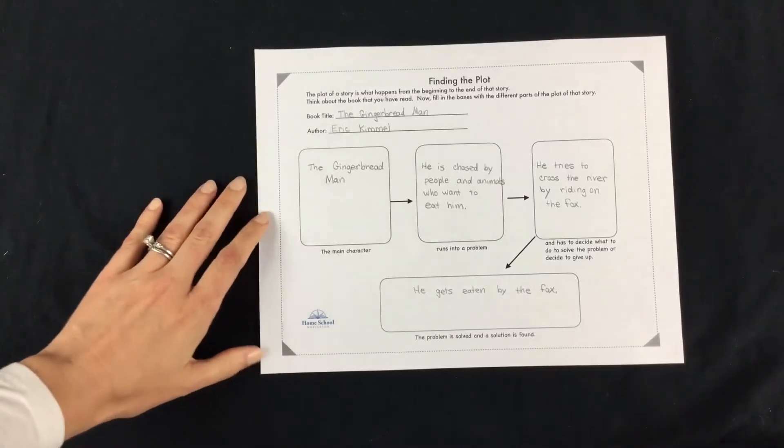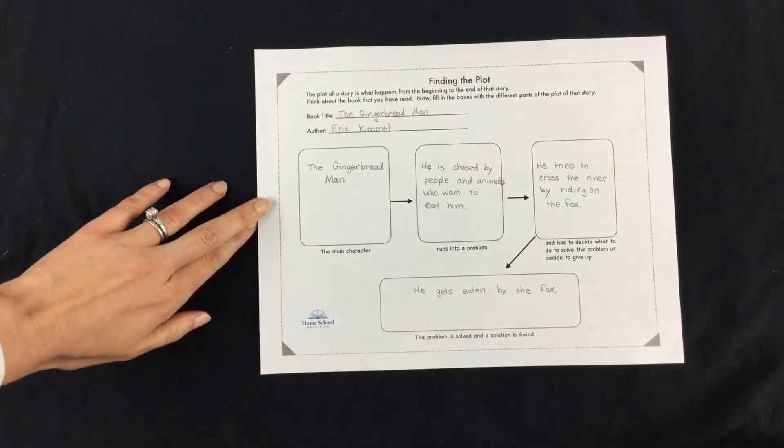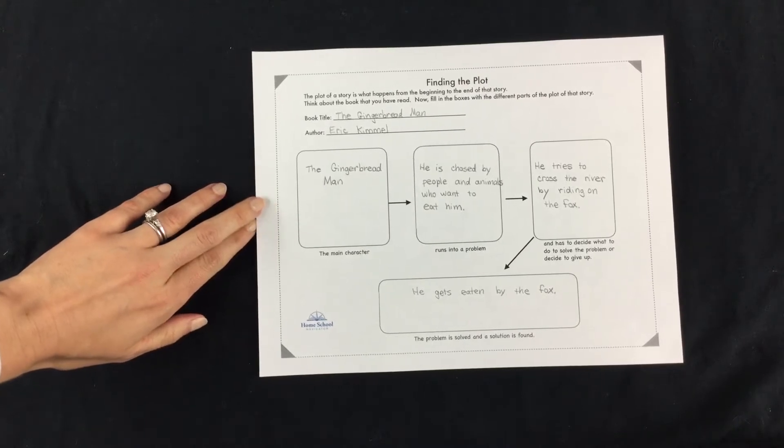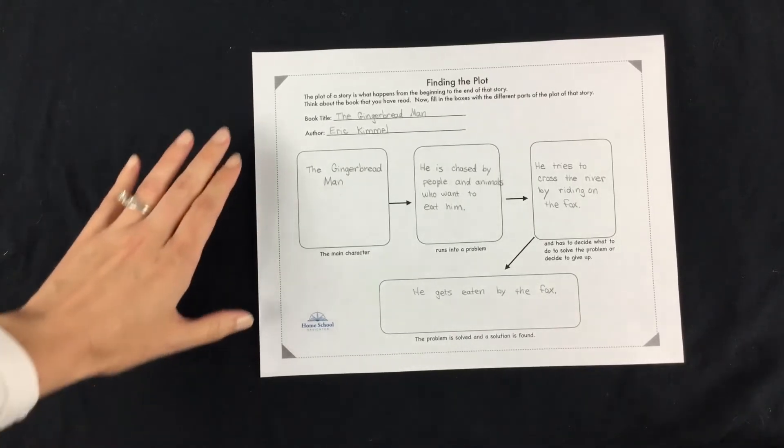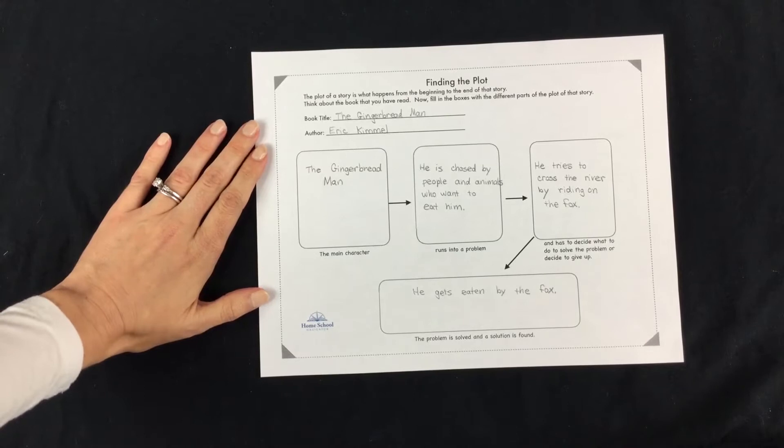Hello and welcome back. Today we're going to be talking about finding the plot of a story. The plot of a story is what happens from the beginning of the story all the way through to the end of the story.